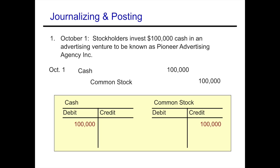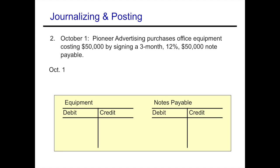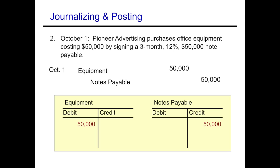Pioneer Advertising purchases office equipment costing $50,000 by signing a three-month, 12% $50,000 note payable. Don't get bogged down by the three-month 12% — that happens later. Right now we're only journalizing the signing of the note and receiving the equipment. Equipment is an asset going up, so we debit equipment. Signing the note means we owe $50,000, which is a liability going up, so we credit notes payable. Then we move that from the journal to the ledger.